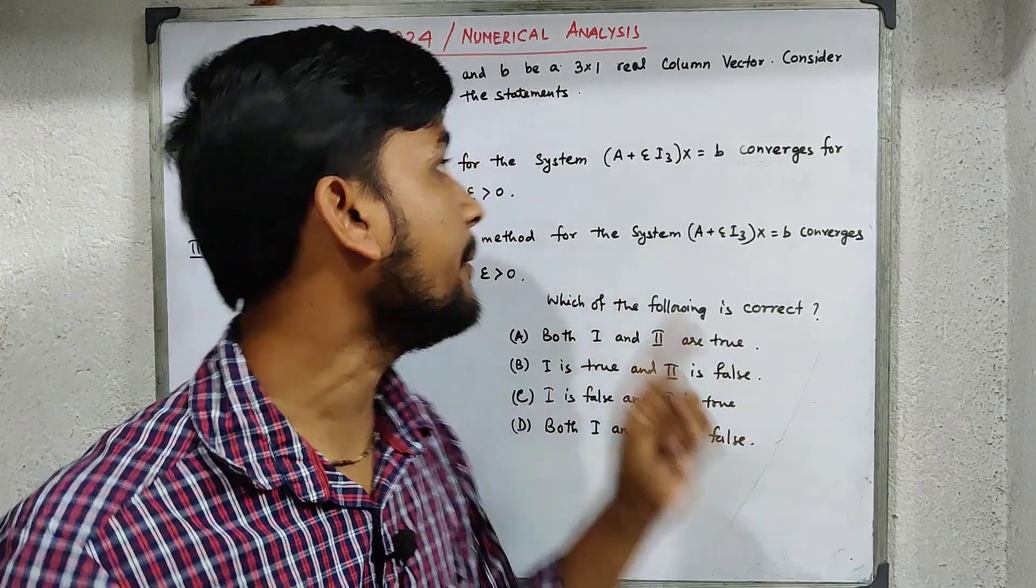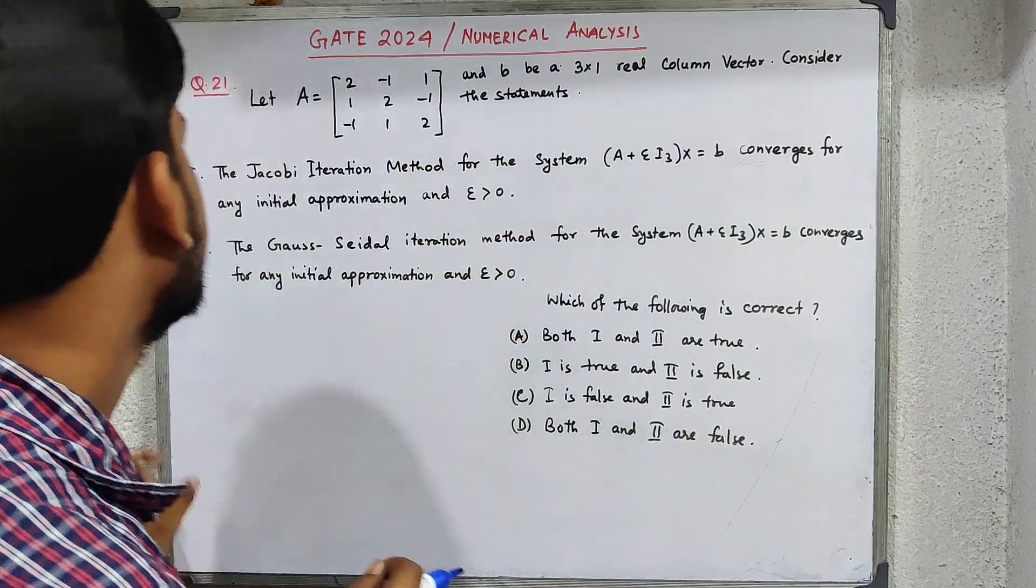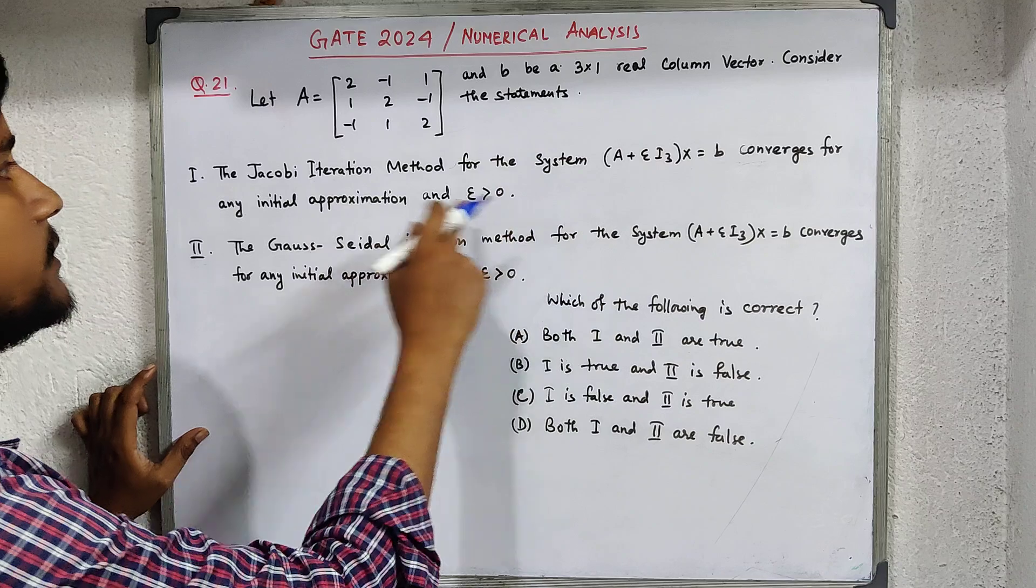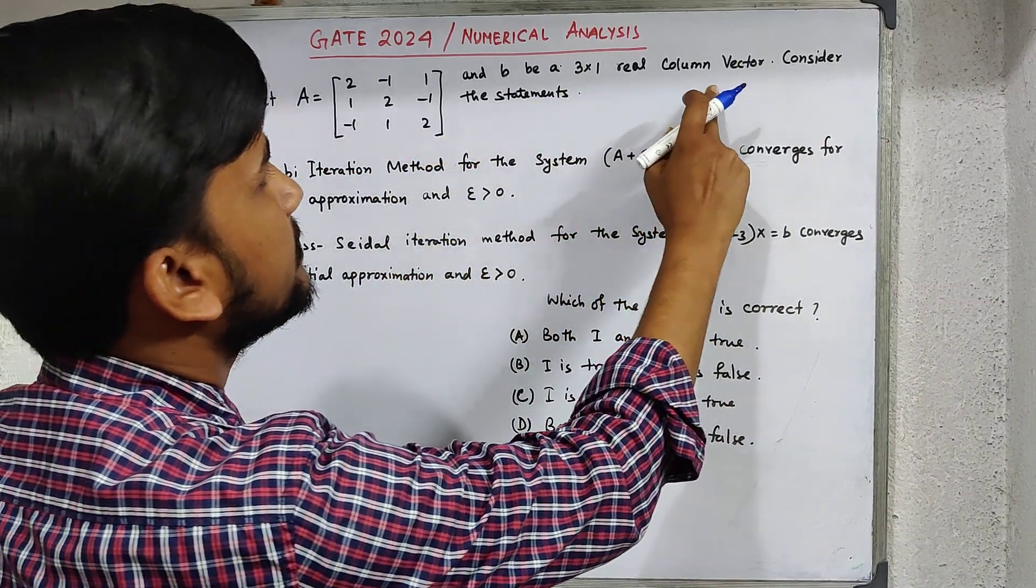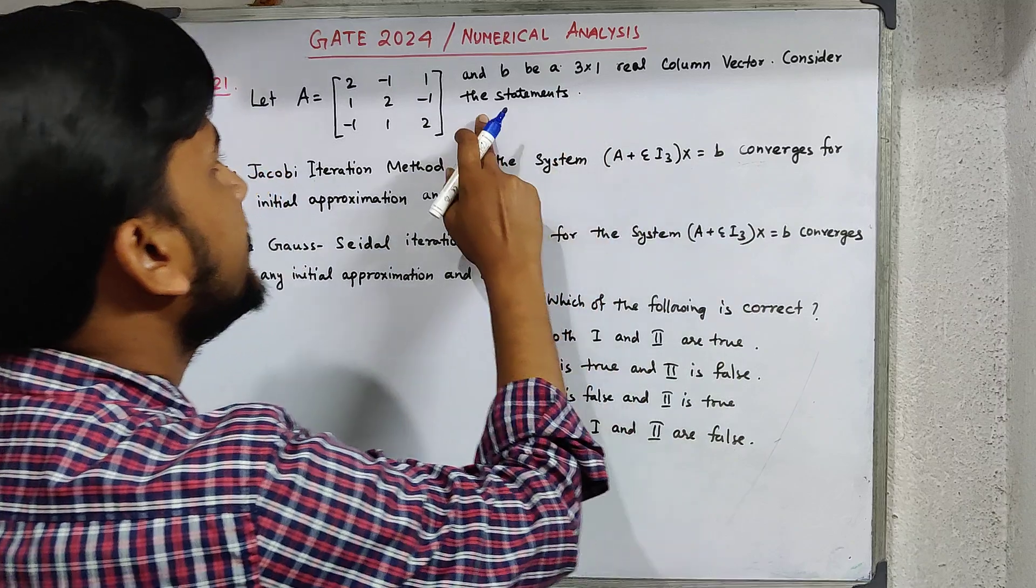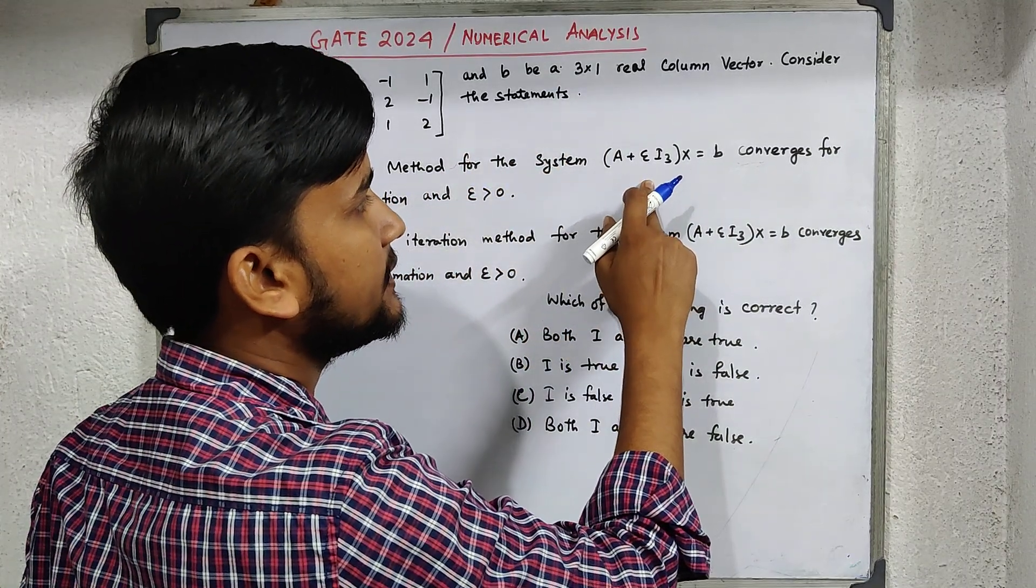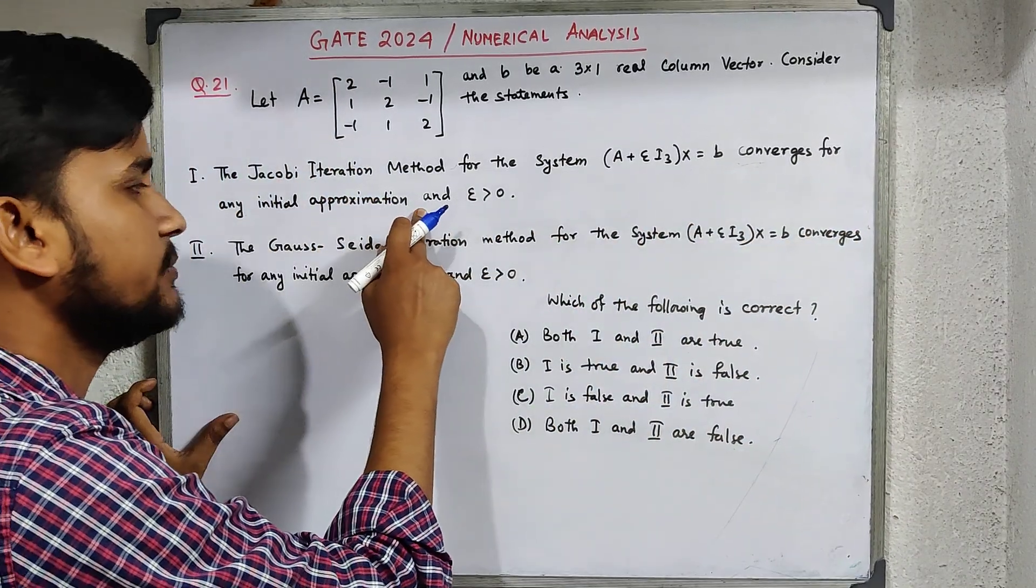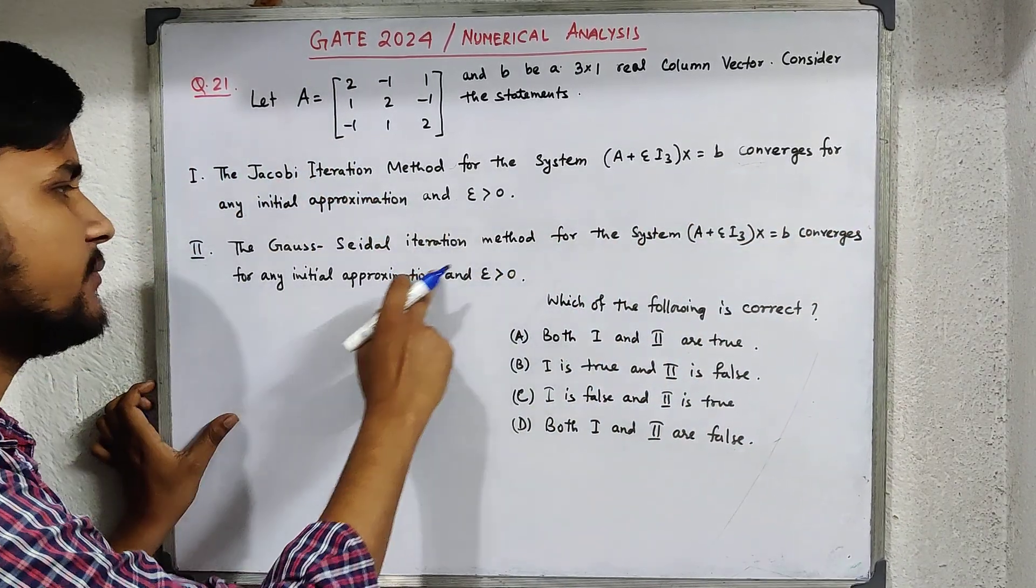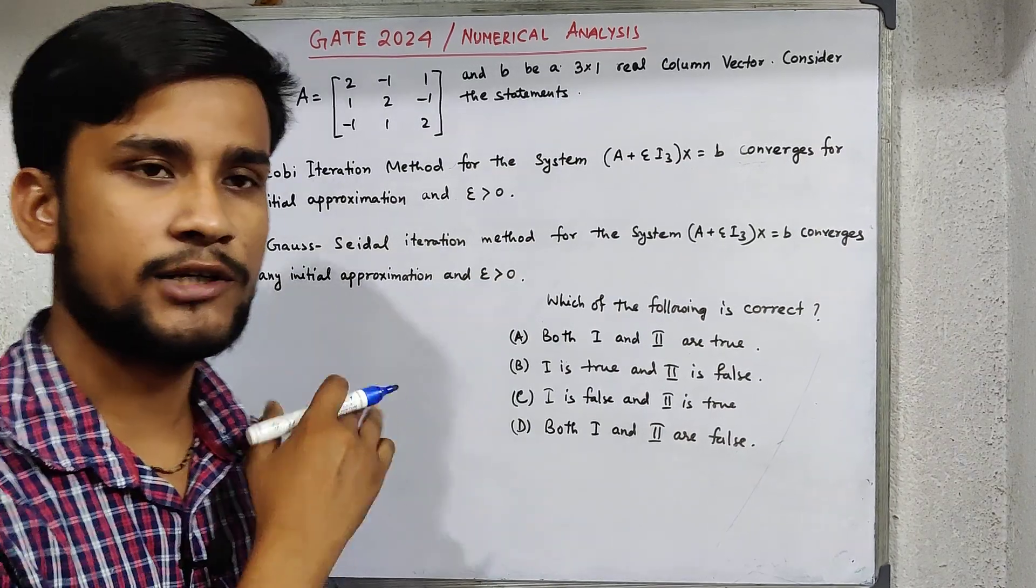The question states: Let A equal a matrix and B be a 3 by 1 column vector. Then the statement asks about the Jacobi method for the system (A+εI₃)x=b converging for any initial approximation and ε>0, and similarly for Gauss-Seidel method. Which of the following statements are true?